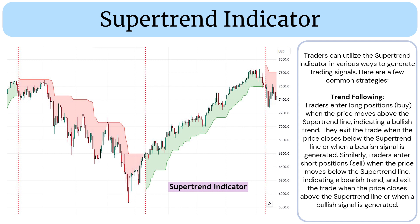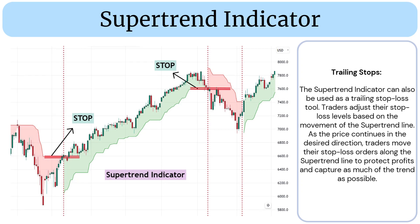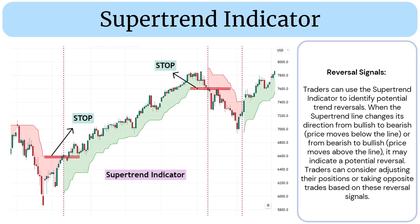The supertrend indicator can also be used as a trailing stop loss tool. Traders adjust their stop-loss levels based on the movement of the supertrend line. As the price continues in the desired direction, traders move their stop-loss orders along the supertrend line to protect profits and capture as much of the trend as possible.